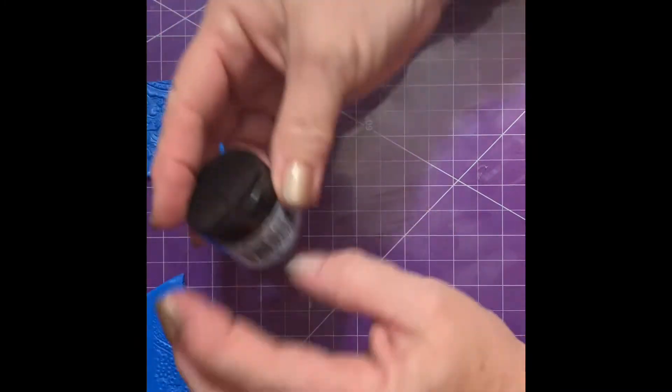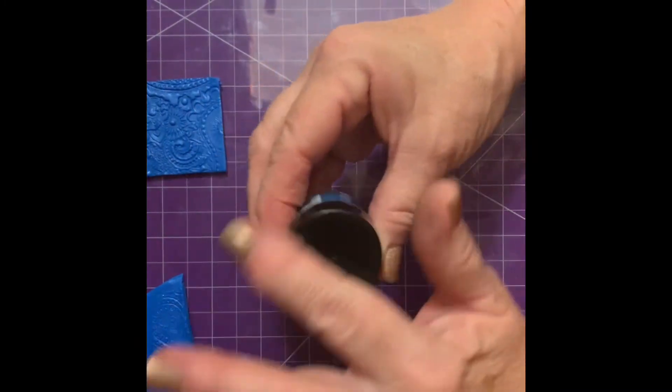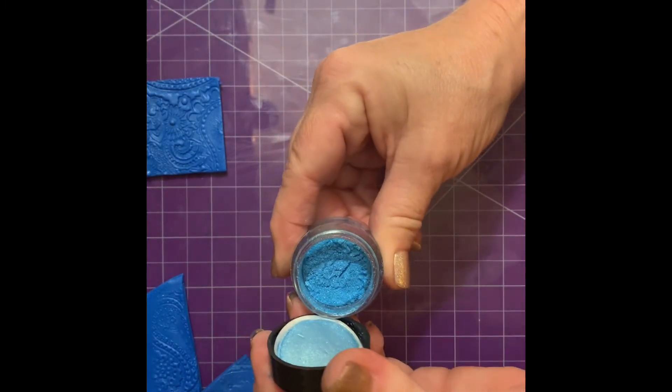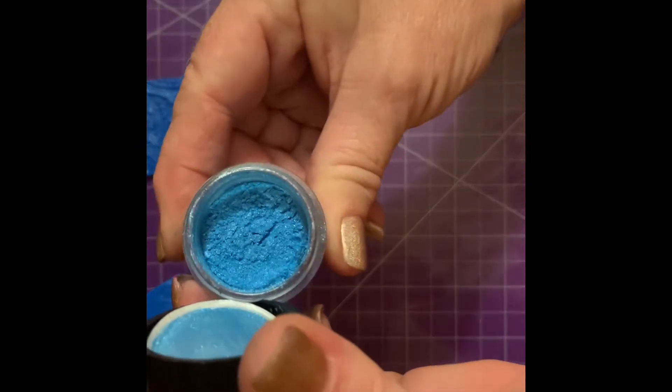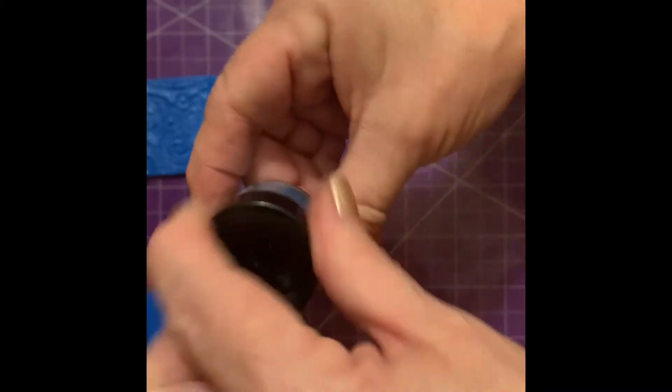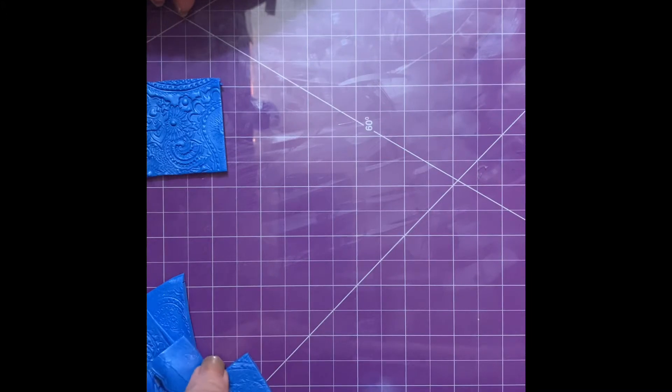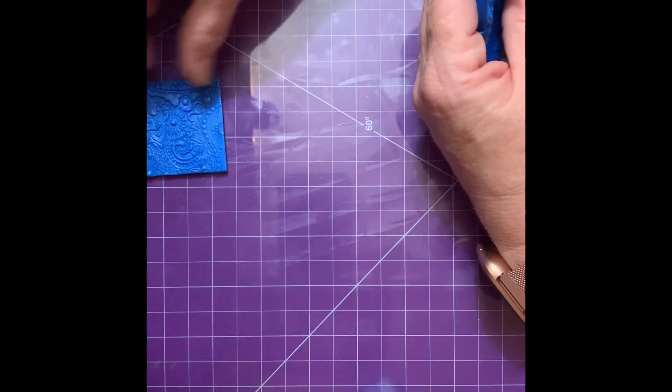I made a good background for it. I did get some Pearl-X mica powder that I'll be using. And you'll see why. Let me get to that. Sky blue. I'm not really a blue person but I thought this would be pretty.